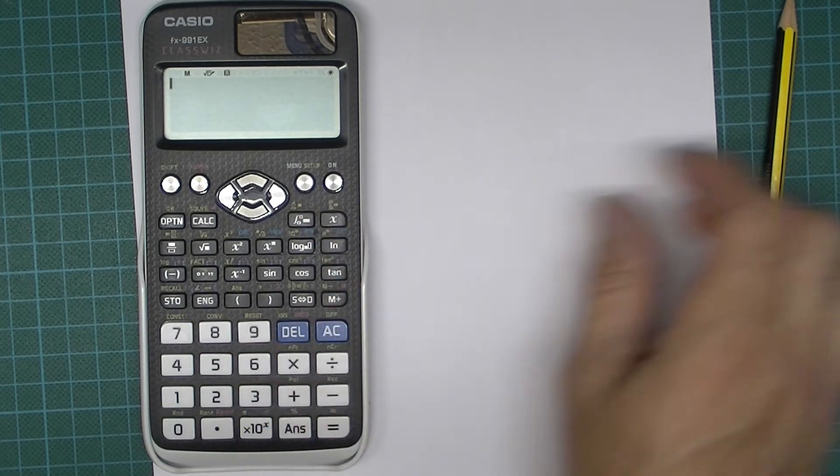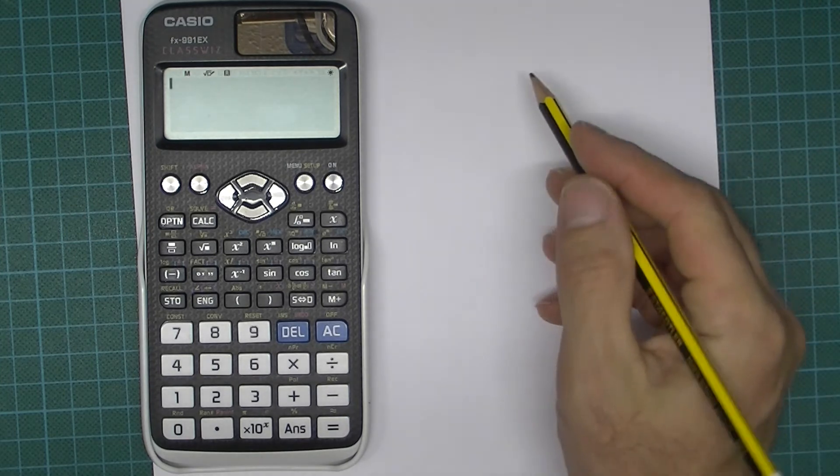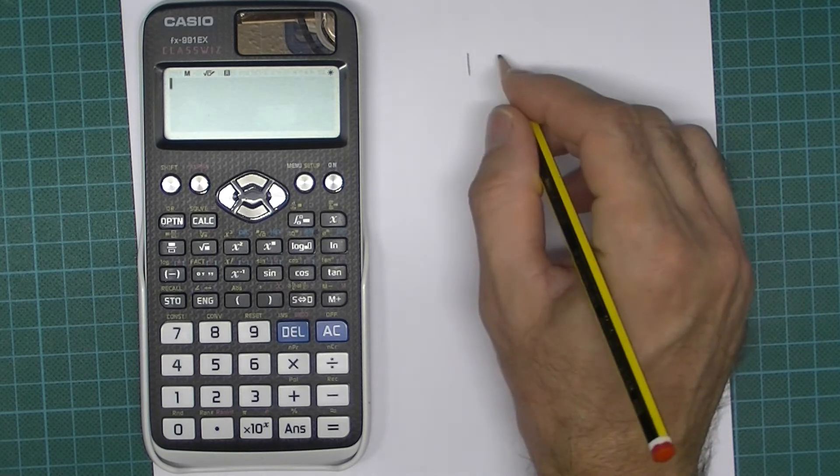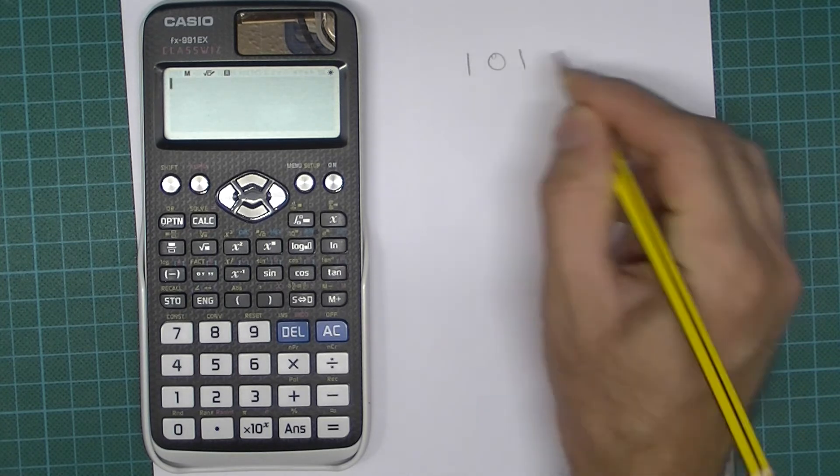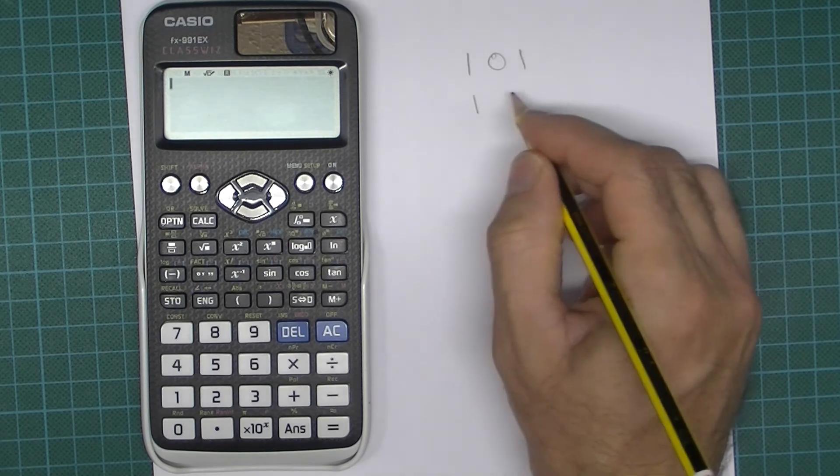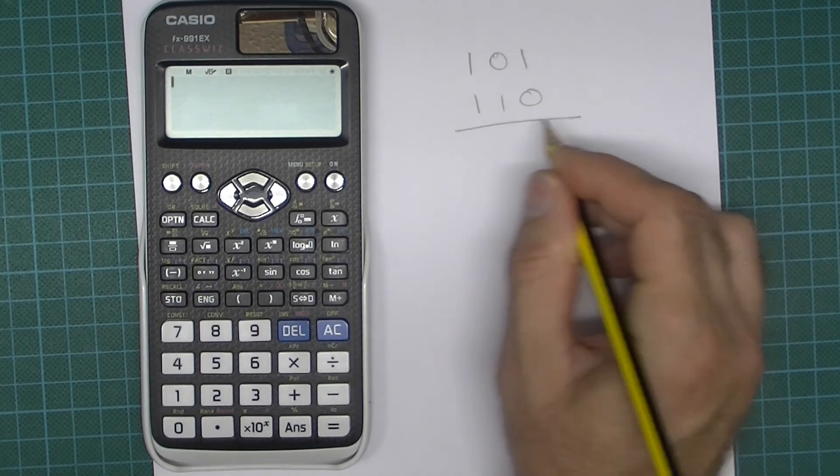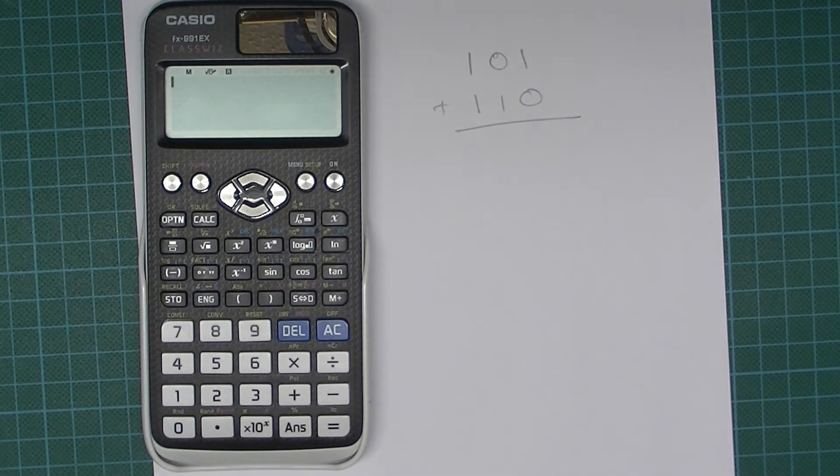Of course if you want to do things like addition, for example if you had a question, we're going to do a really simple one, 1, 0, 1, this is a binary number and we had say 1, 1, 0. OK, so let's add those two three bit numbers.